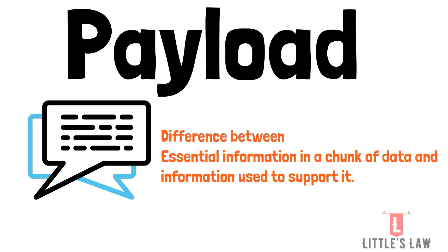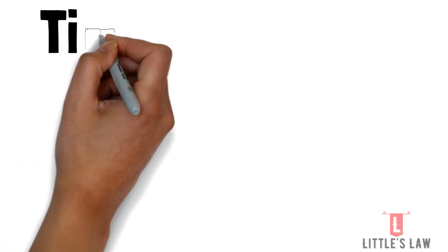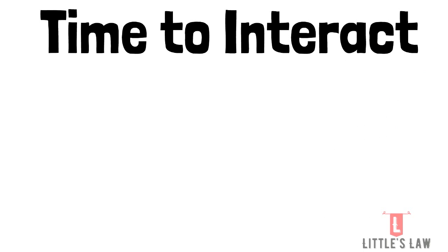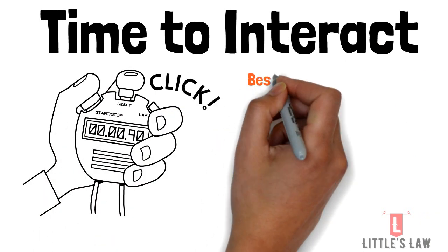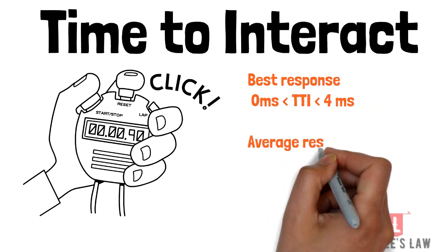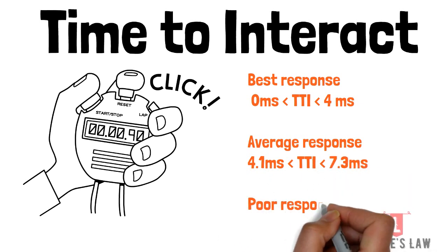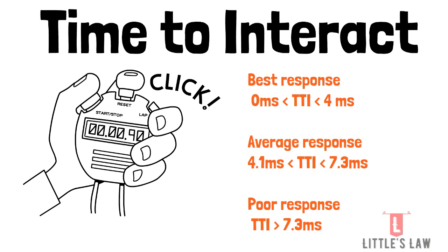Time to Interact (TTI) measures the time for a website to become fully interactive. A fully interactive page displays useful content and is responsive to user interaction within 50 milliseconds. The acceptable SLA range is 0 to 7.3 seconds. A TTI of 0 to 4 seconds is considered fast, 4.1 to 7.3 seconds is moderate, and anything beyond 7.3 seconds is considered slow.